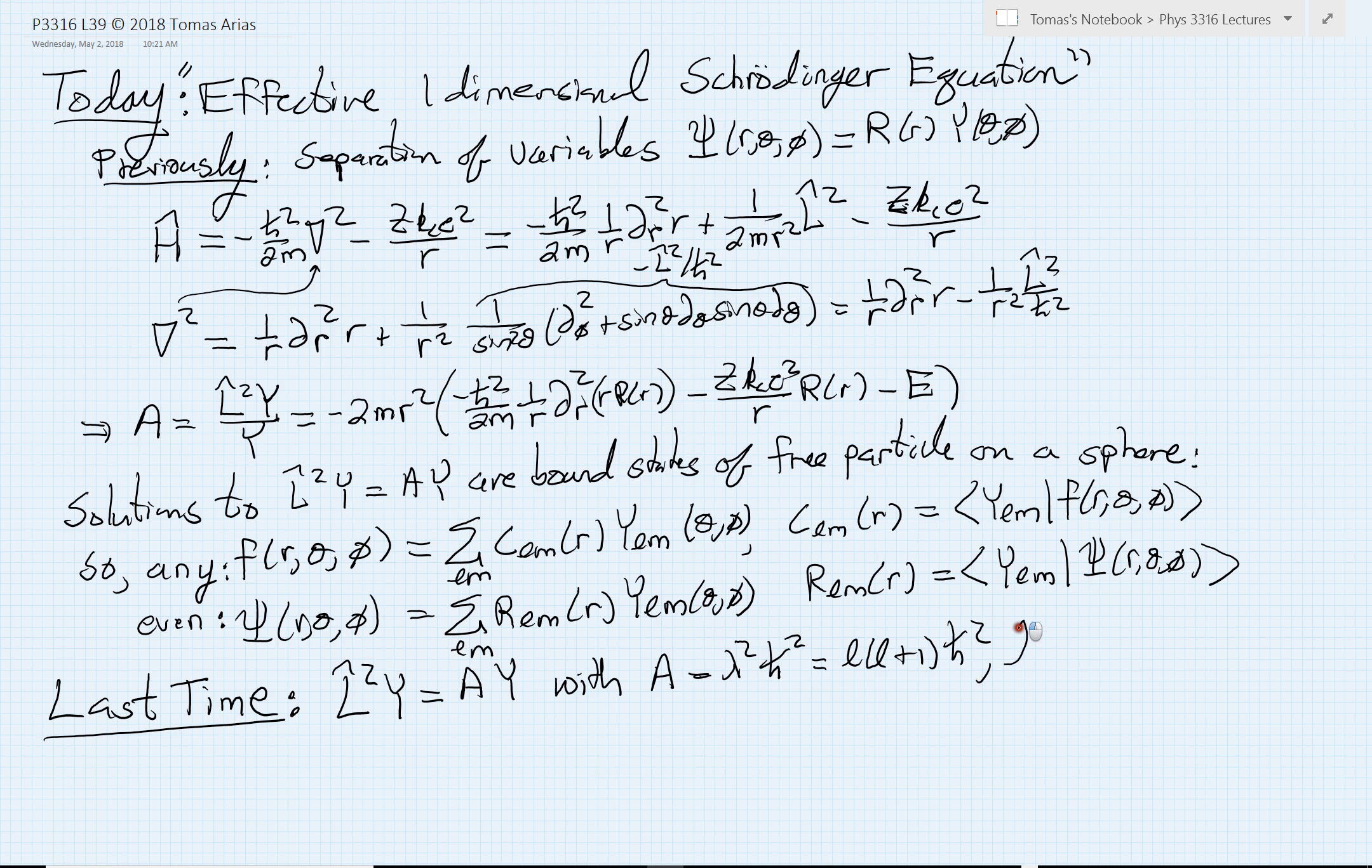And as we had discussed, the allowed values of a come when l takes on any non-negative integer value, starting at zero and counting up in what have to be integers up towards infinity. So our task then now is to take all of this information and to begin with this expansion and then derive for ourselves this so-called effective one-dimensional Schrodinger equation.